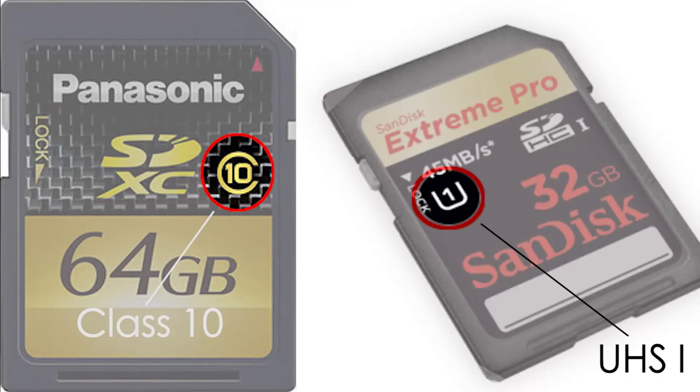So Class 2 means 2 MB per second, Class 4 means 4, Class 6 means 6, and 10 means 10. You can figure out which one you have by looking at the markings on your SD card.